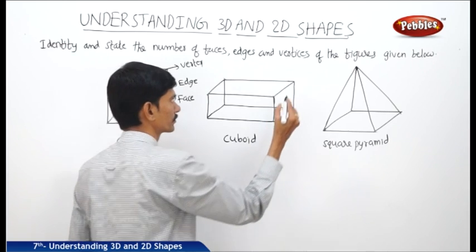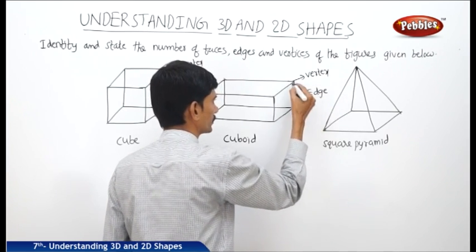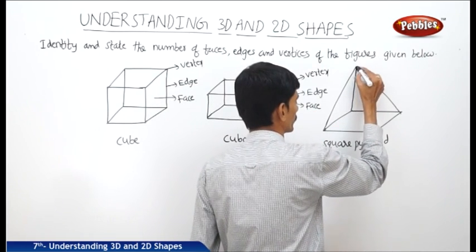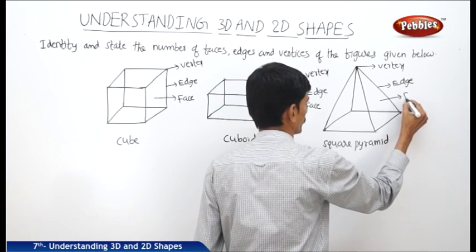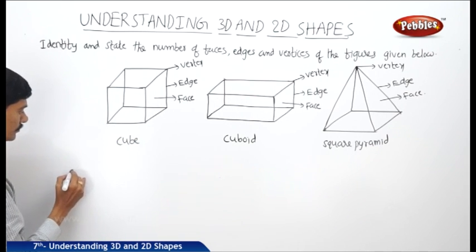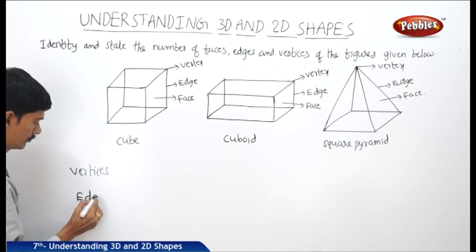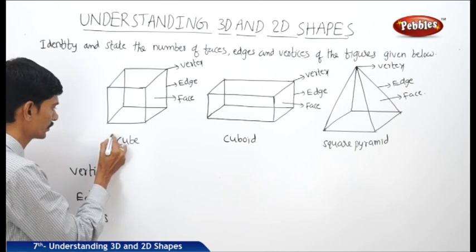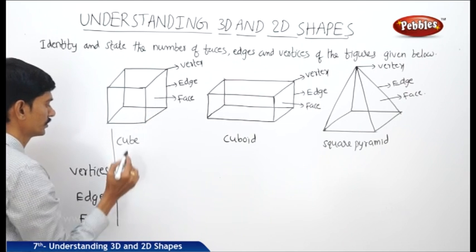For the cube, this corner is a vertex, the line segment is an edge, and the flat surface is called a face. Now if you find the number of vertices, edges, and faces for the cube: there are one, two, three, four, five, six, seven, eight — eight vertices.